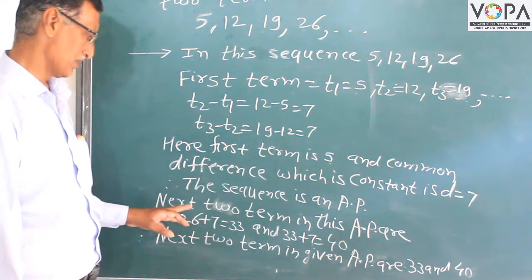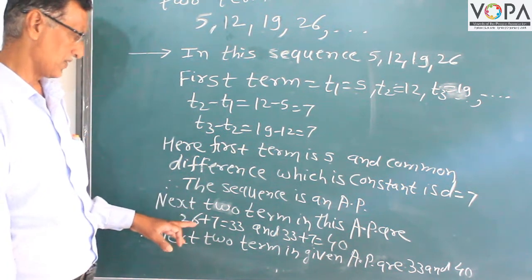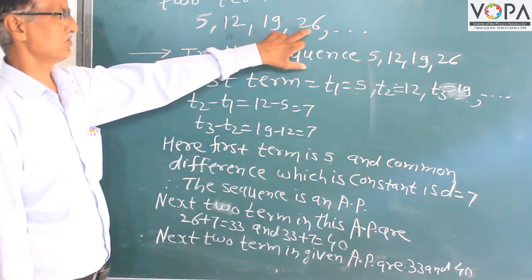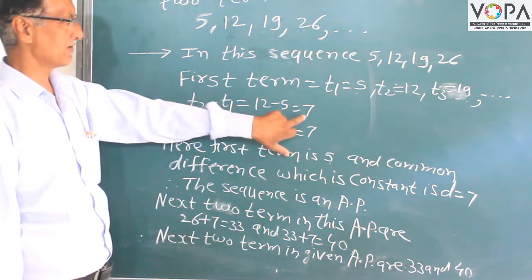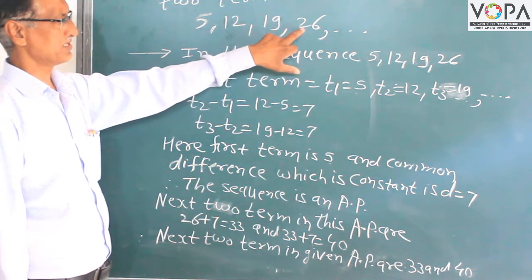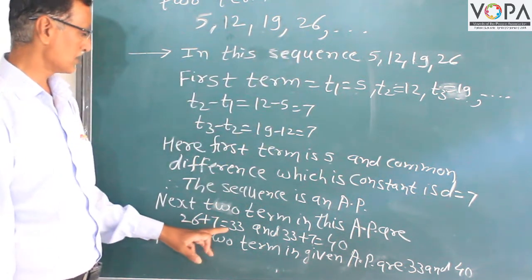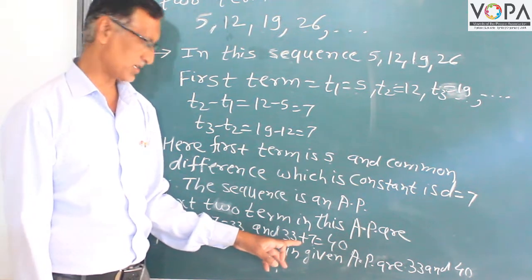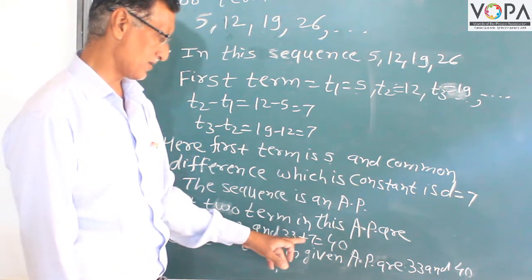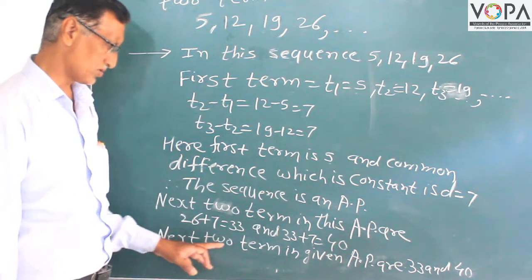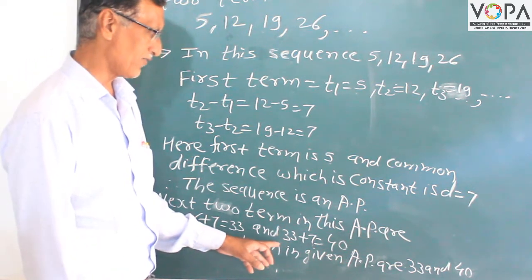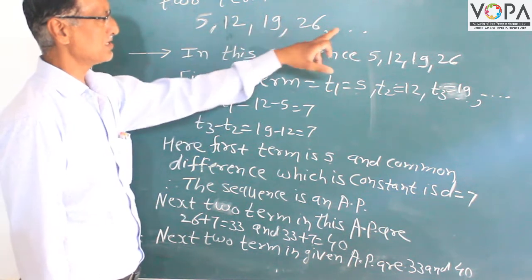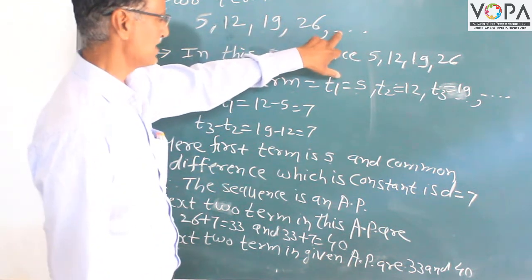The next two terms: 26 plus 7 is equal to 33. And 33 plus 7 is equal to 40. So the next two terms of the AP are 33 and 40. The full sequence becomes: 5, 12, 19, 26, 33, 40.